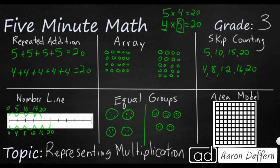Our final method is the area model, and this is just a 10 by 10 grid. I'm going to show you both ways that you can draw this area model — it's going to look an awful lot like an array. So if I wanted, I could draw five across and four down.